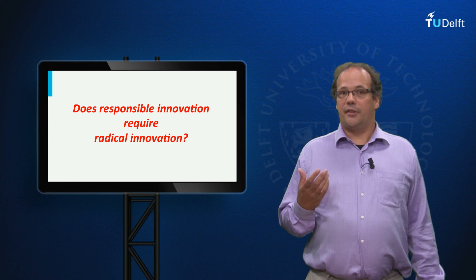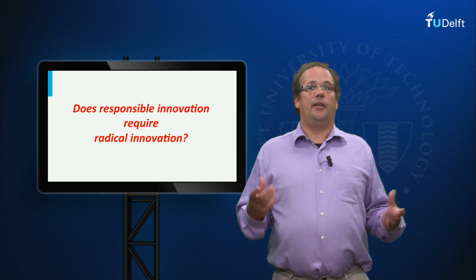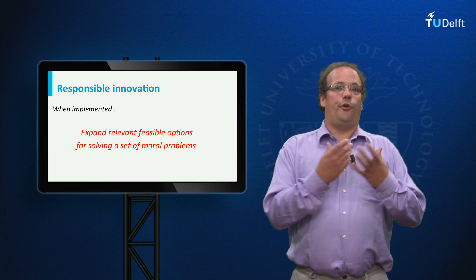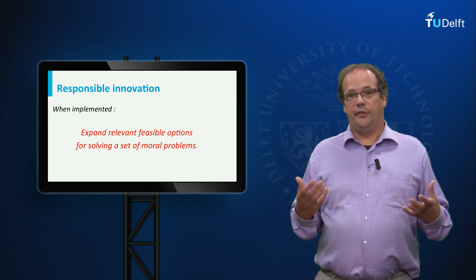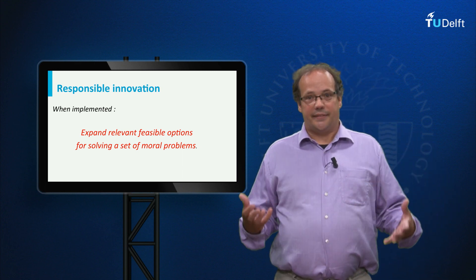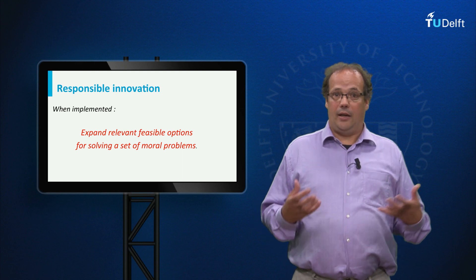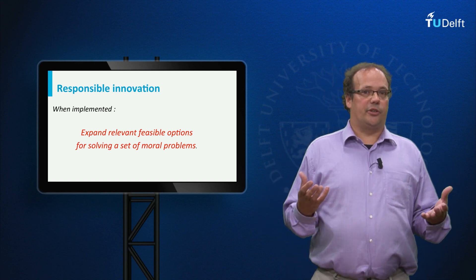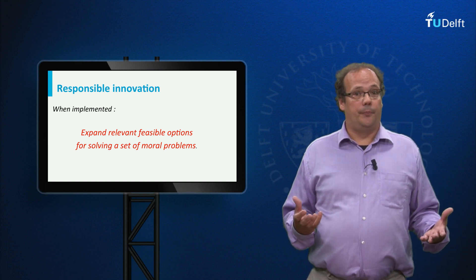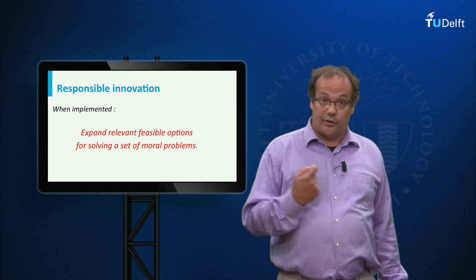Now I can turn to one of the central questions of this lecture: does responsible innovation require radical innovation? To answer this, let us look at the definition of responsible innovation from a previous lecture. It says responsible innovation is the innovation that, when implemented, expands the set of options for solving a moral problem. All four types we discussed can expand the set of options for action, and all types can therefore be responsible. Still, responsible innovation will, I hold, often require radical innovation.